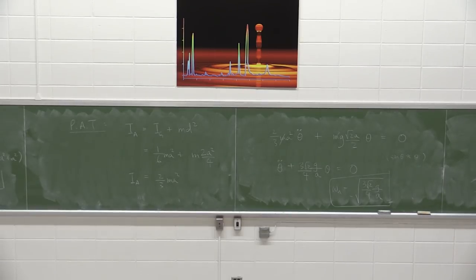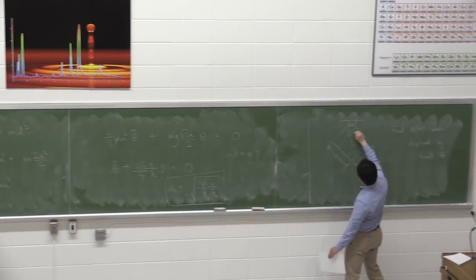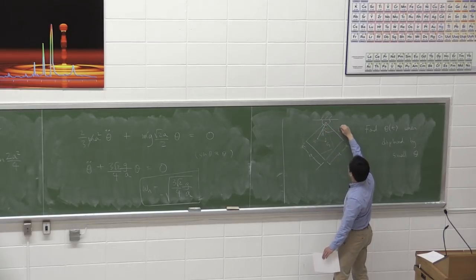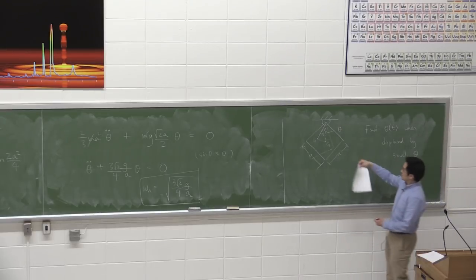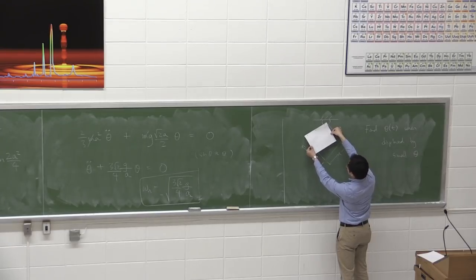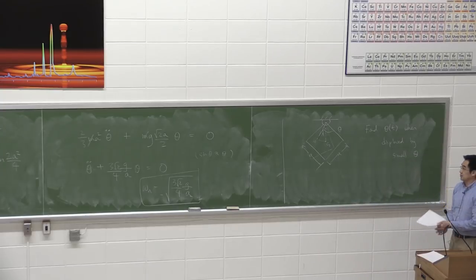With the small angle approximation applied and masses canceled, the equation reduces to theta_double_dot + (3*root2 / 4)*(g/A)*theta = 0. Therefore, omega_n = sqrt(3*root2 / 4 * g/A). A student asks about the geometry, and it's clarified that when the square is tilted by theta, the center of mass G shifts and the moment arm D*sin(theta) drives the restoring moment.